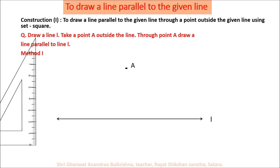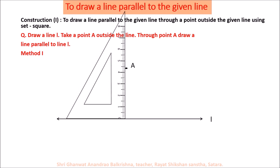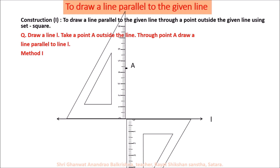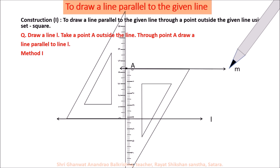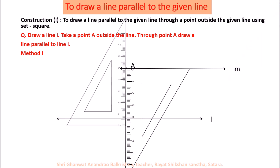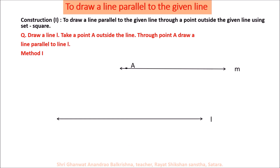Use the set square and move it towards point A. Set the set square as shown in the diagram, then take another set square with its right angle facing upward. Move this set square up to point A and draw a line passing through point A. Name this line M. We can say that line M is parallel to line L through point A.